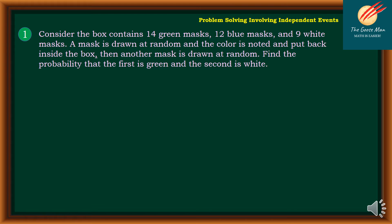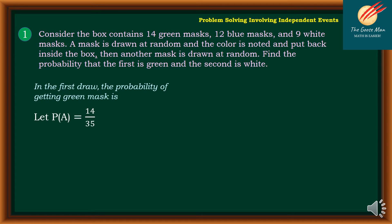Problem number 1: A box contains 14 green, 12 blue, and 9 white masks. A mask is drawn at random, the color is noted, and it is put back inside the box. Then another mask is drawn at random. Find the probability that the first is green and the second is white. The probability of A, getting a green mask, is 14 out of 35, because 14 + 12 + 9 = 35 total masks.